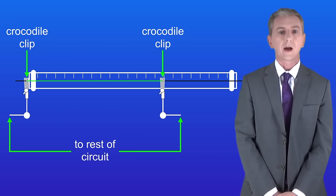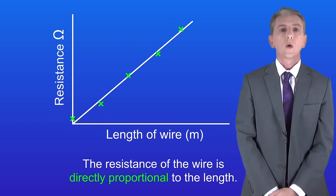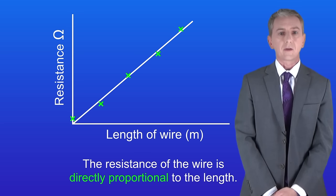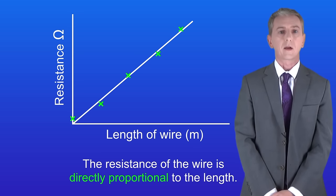When I do this experiment, I get a graph like this. We get a straight line which passes through zero. That tells us that the resistance of the wire is directly proportional to the length.